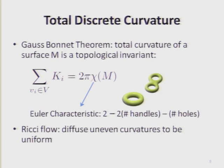There is the Gauss-Bonnet theorem that says: given a surface, the total curvature of the vertices on the surface is a topological invariant. No matter how I deform the surface — stretch it, compress it, do all kinds of things — the total curvature doesn't change. The total curvature equals 2π multiplied by the Euler characteristic of the surface, which only depends on the topological features. In particular, this is the number 2 minus 2 times the number of handles minus the number of holes. A donut has one handle; a double donut has two handles.